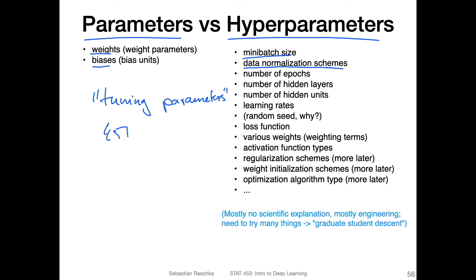Hyperparameters are parameters that you as the person setting up the model have to choose yourself. You try them out in practice and see what performs better. There's no way to use back propagation to learn these. For example, the number of epochs can be considered a hyperparameter, the number of hidden layers, the number of hidden units, the learning rate, and to some extent also the random seed.